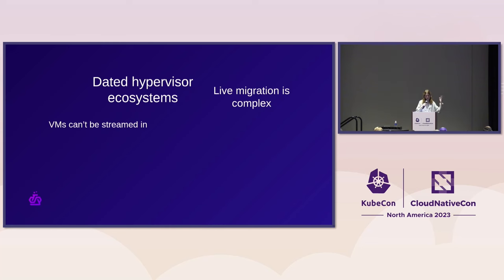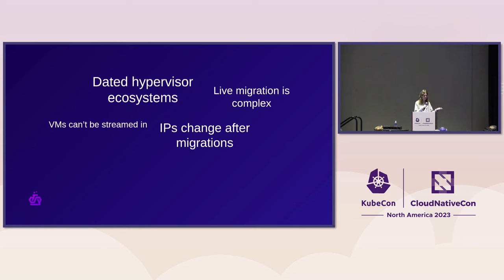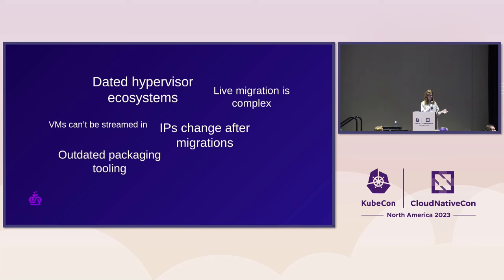VMs need to have the entire virtual machine locally available before you can resume it — you can't stream it in like a WebAssembly module. Also, if you move from, say, Frankfurt to New York, your connections would break — you'd have a different IP address, and even using Anycast you'd still have connections breaking during the migration. These protocols are not designed to be extensible — if you want just one extra feature, like signaling your application before suspending or after resuming, it's really hard to do.